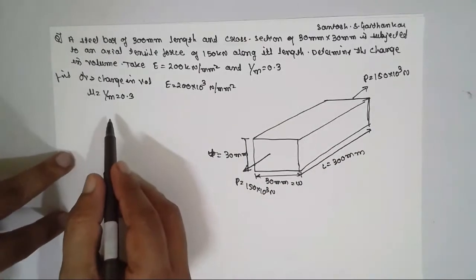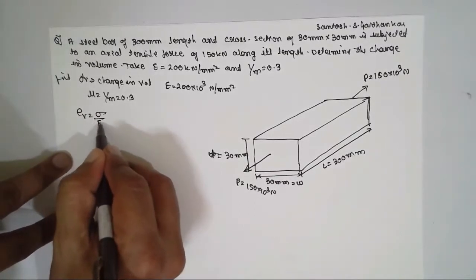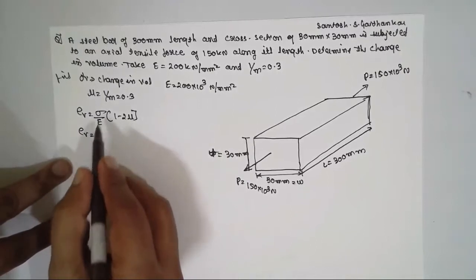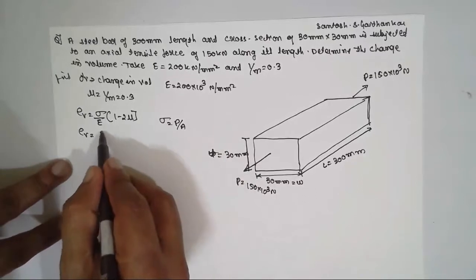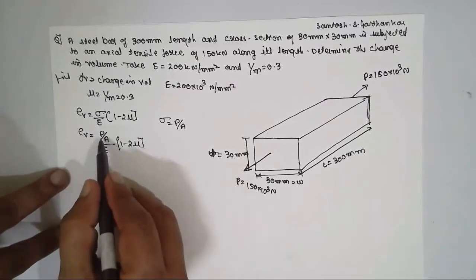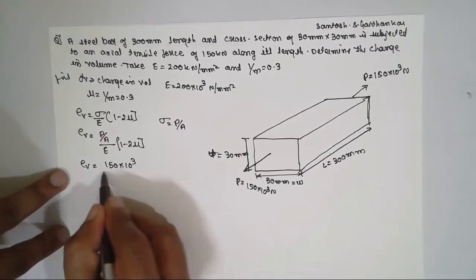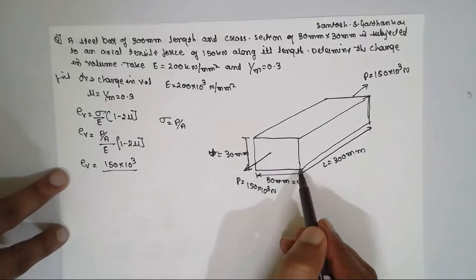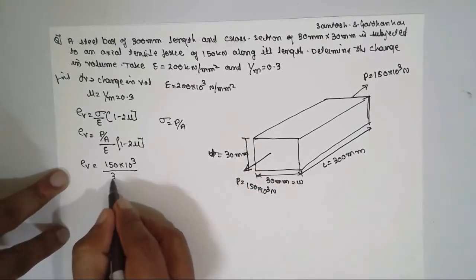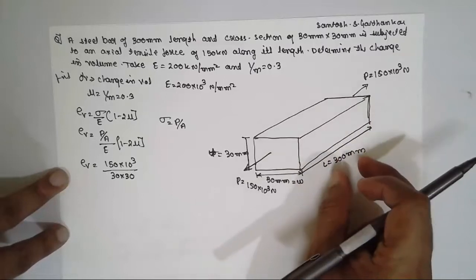For a rectangular section, the formula for volumetric strain is: Ev = (σ/E)(1 − 2μ), where σ = P/A. So Ev = [P/A] / E × (1 − 2μ). P = 150 × 10³; since the tension is applied along the length, we consider only the cross-sectional area, which is 30 × 30. E = 200 × 10³, and μ = 0.3, so (1 − 2 × 0.3).